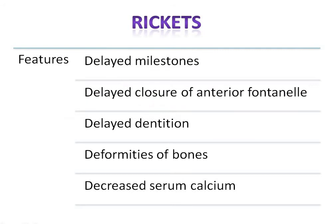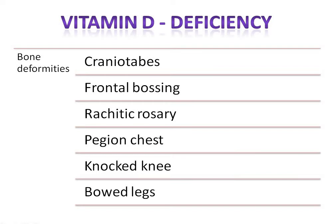We will discuss rickets, which is vitamin D deficiency in children. The various features include delayed milestones, delayed closure of the anterior fontanelle, delay in dentition, deformities of the bone, decreased serum calcium level, and bony deformities such as craniotabes, enlargement of the skull, frontal bossing, rachitic rosary, and pigeon chest.